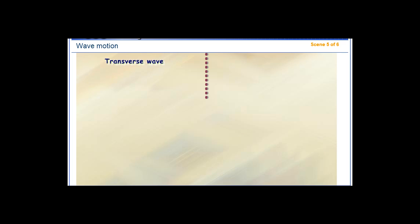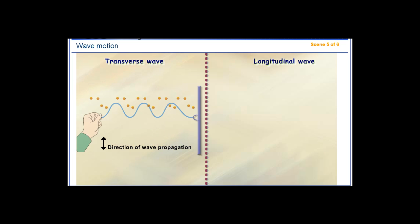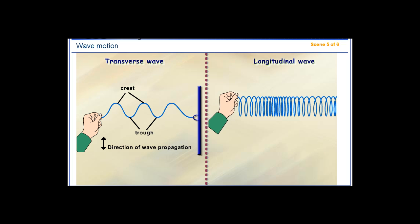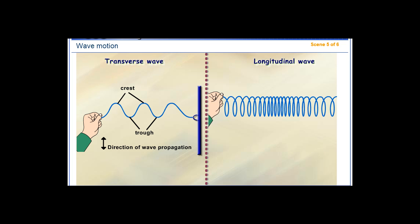First, the transverse and longitudinal waves. In the transverse wave, the direction of particle vibration is perpendicular to the direction of wave propagation. In the longitudinal wave, the direction of particle vibration is parallel to the direction of wave propagation.